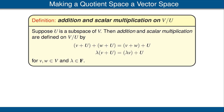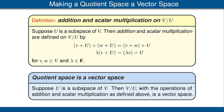Suppose U is a subspace of V. We have defined the quotient space V divided by U. We now define addition and scalar multiplication on this quotient space in the obvious way as shown here. You should make sure you understand why these definitions make sense. With addition and scalar multiplication defined, it should be no surprise that the quotient space becomes a vector space under those operations. Again, be sure to verify the details.